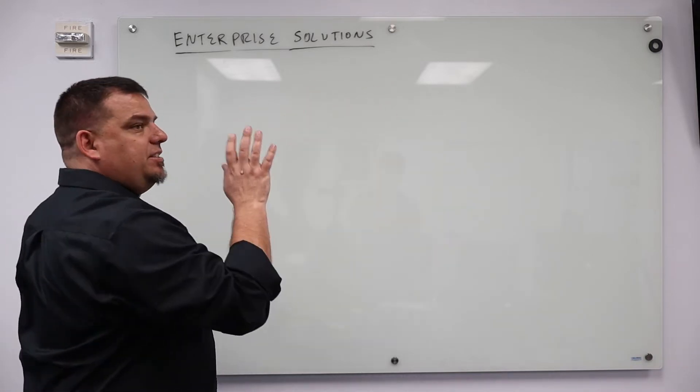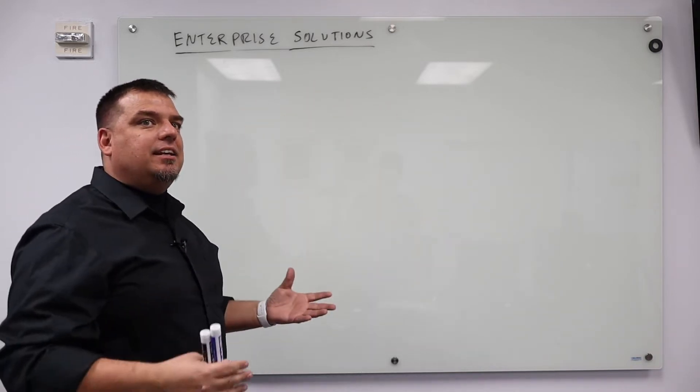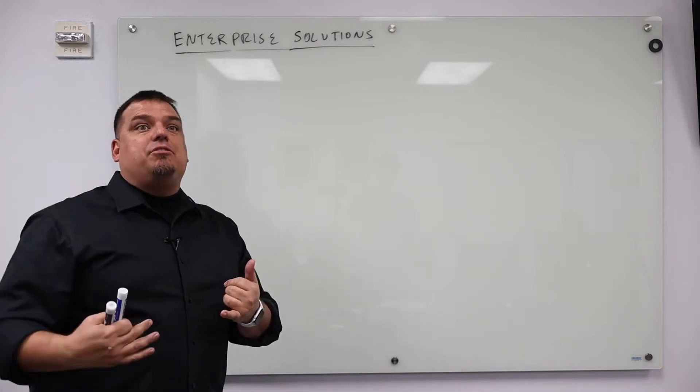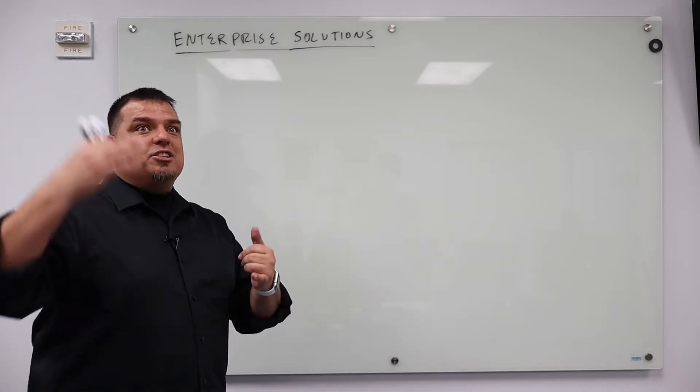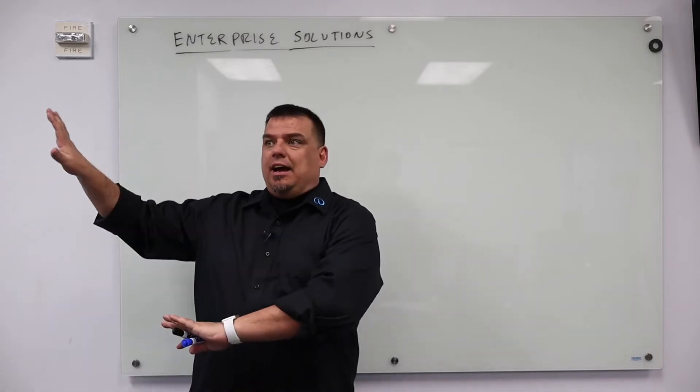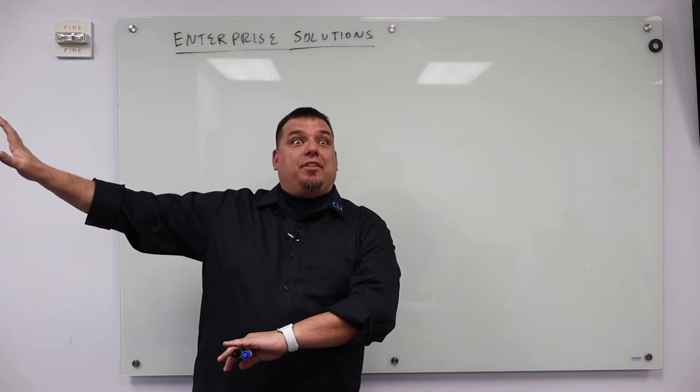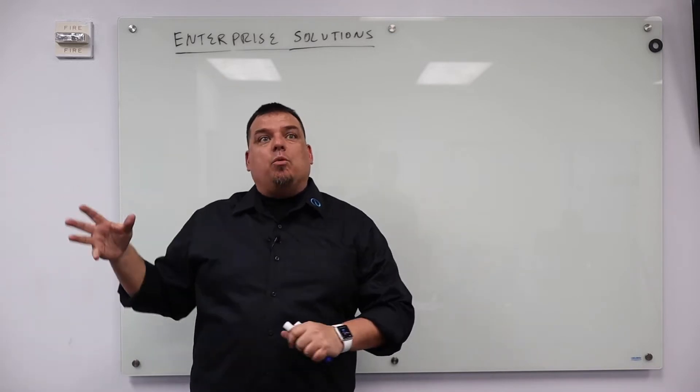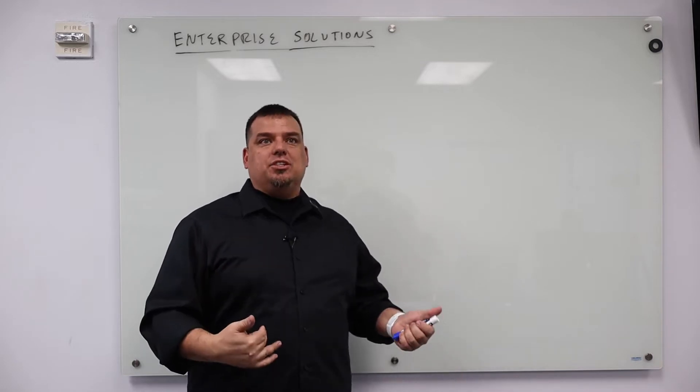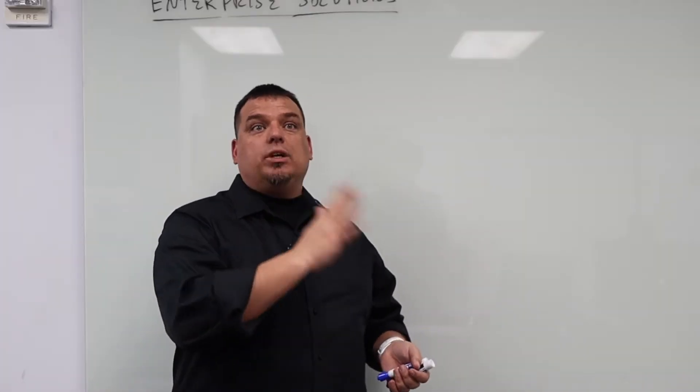In order for us to even develop enterprise solutions, we needed the fourth industrial revolution. We needed networks. We already had to have the third industrial revolution happen, that is automation. Now in the fourth industrial revolution, we're taking all that information now that's available because we automate it and we're doing something with it. We're helping to automate the process of making decisions and we want to make those decisions in real time.